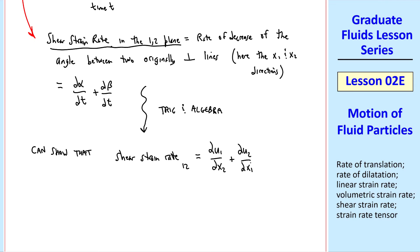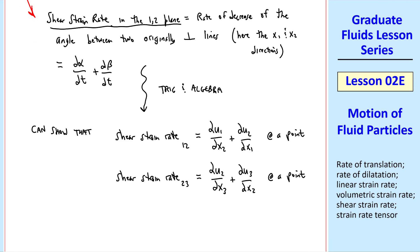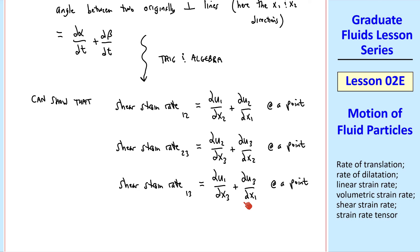If you do the same thing in the 2, 3 plane, the x2 and the x3 plane, we get del u2 del x3 plus del u3 del x2. And similarly for the x1 x3 plane. So we have three strain rates in the three primary planes.